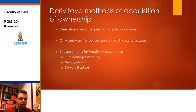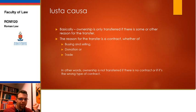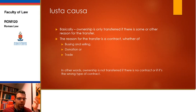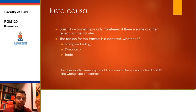First, justa causa. A justa causa is necessary for the transfer of ownership. Without a justa causa, you can physically transfer the object, but the actual legal implications do not follow. Justa causa, literally translated, is 'some or other reason — causa, cause — acknowledged and used in law.' A justa causa is a just cause. The classic example would be a contract — for instance, buying and selling, donation, or trade. All these contracts would be sufficient to constitute a justa causa.